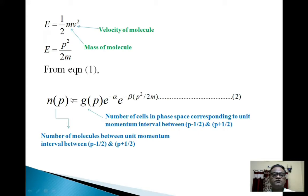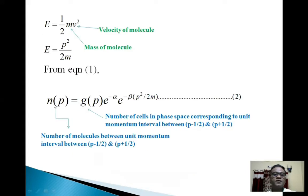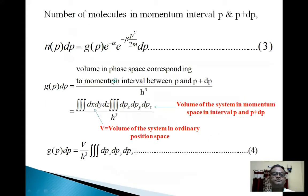So from Equation 1, we can write: N_p = G_p * e^(−α) * e^(−β * p²/2m). (Equation 2) Here N_p is the number of molecules in the unit momentum interval between p − 1/2 and p + 1/2, and G_p is the number of cells in phase space corresponding to that interval. So the number of molecules in momentum interval p to p + dp is given by: N_p dp = G_p * e^(−α) * e^(−β * p²/2m) dp. (Equation 3)